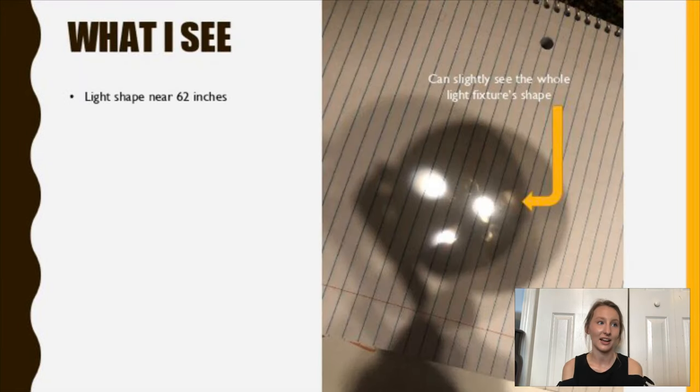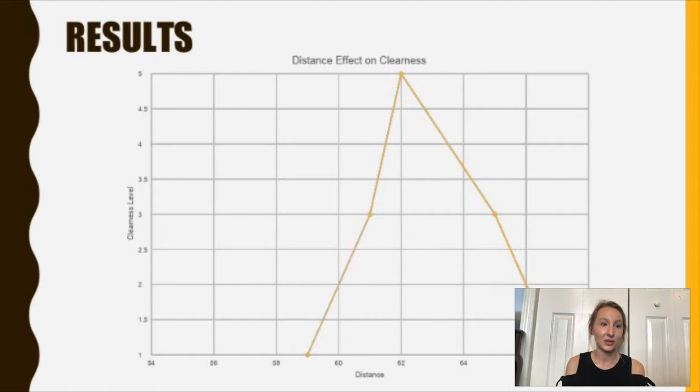So what I saw at 62 inches was that I could actually see the light fixture shining through, so I could see the metal pieces shining through onto that paper, and I also saw the light shape shining through, which was what I wanted to capture. So 62 inches was the best distance for clearness, and that was at the midpoint, and 59 inches and 67 inches both weren't that successful in this.